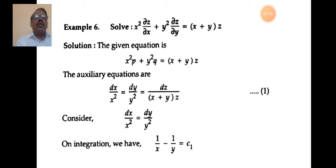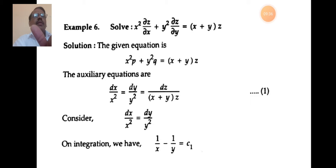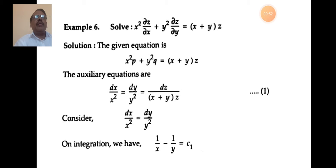On integrating dx/x² = dy/y²: this gives −1/x = −1/y, or 1/x − 1/y = c₁. This is the first solution of the given partial differential equation. We can find one solution by grouping; the other solution may require grouping or multipliers.